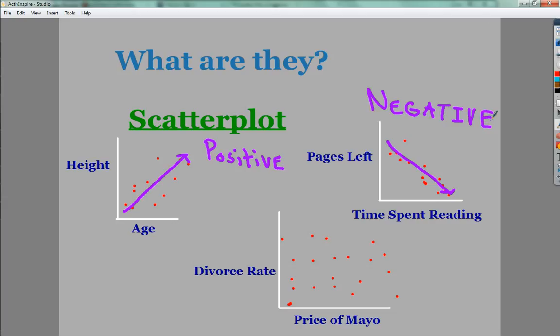Now, in terms of divorce rate and the price of mayonnaise, you see there's dots everywhere. Really, there's no correlation at all because divorce rate and price of mayonnaise aren't related. At least I hope not. So there you go.